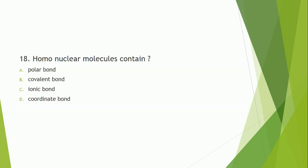Question number 18: What does a homonuclear molecule contain? A homonuclear molecule has a covalent bond present. The correct answer is option B.